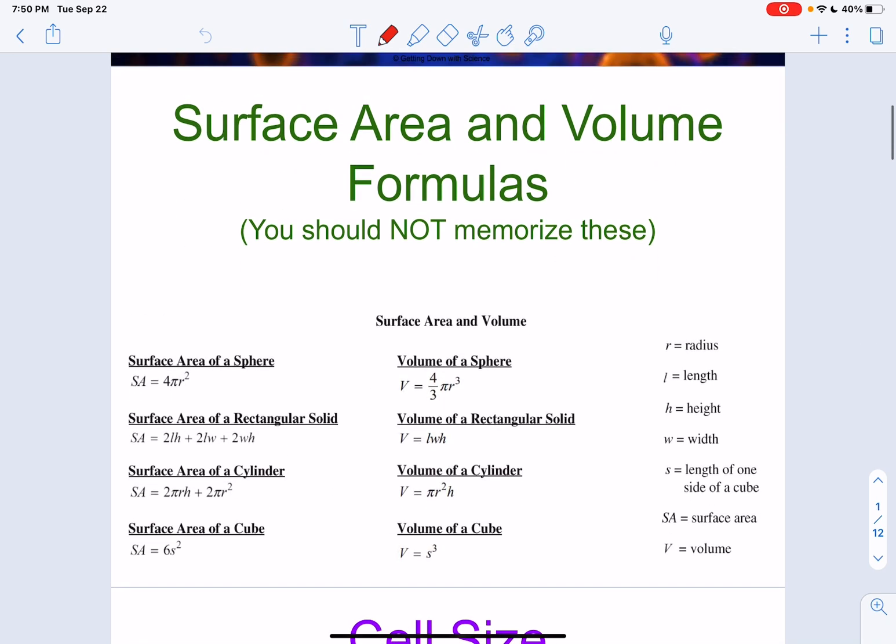You do not need to memorize these formulas. The only formula I would recommend you memorize is figuring out a radius from diameter. Oftentimes you might get a circle and they tell you the diameter is 14, but when you look at the formulas for sphere and cylinder, you may notice that it's actually asking for radius. So how do we calculate radius from a diameter? Really easy. Radius is always going to equal the diameter divided by 2.